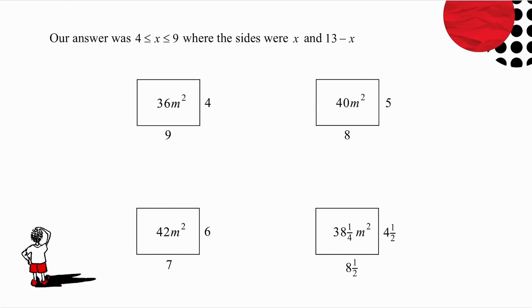What about fractions? If one side is 4 and a half, 13 minus 4 and a half, and the area 38 and a quarter. So it doesn't matter what my sides are, one of the sides can go from 4 up to 9, and my area will always be greater than or equal to 36.